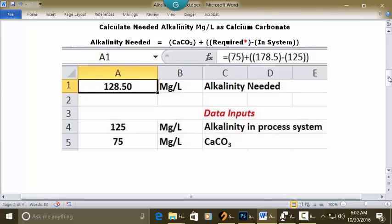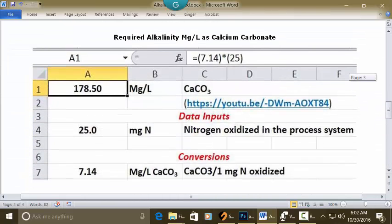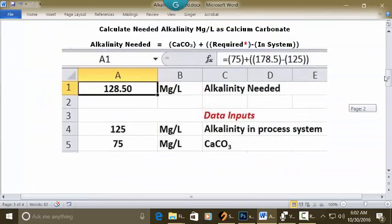Now, the 178.5, which is the required alkalinity, milligrams per liter of calcium carbonate, is solution and results and everything shown right here. You can actually go see that video if you like.